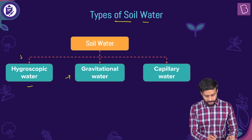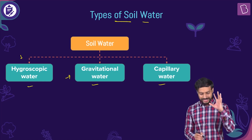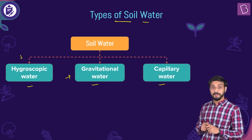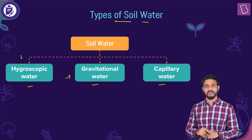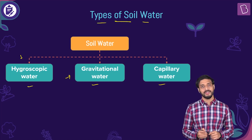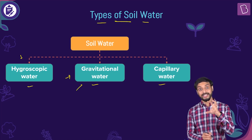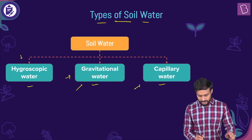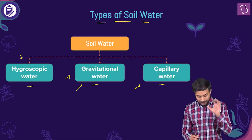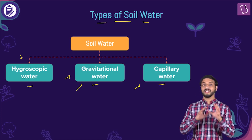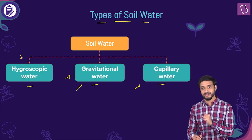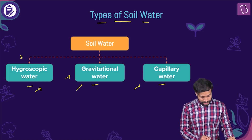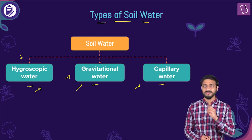I'm sure you're not much aware of these, but I'll explain. Hygroscopic water, gravitational water, capillary water — can anyone guess what the basis of this classification is? The classification of the types of soil water — try to guess. The basis is on the way the water molecules interact with the soil particles. That's the basis of this classification.